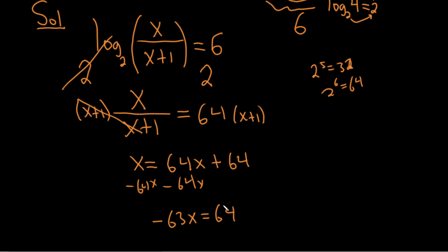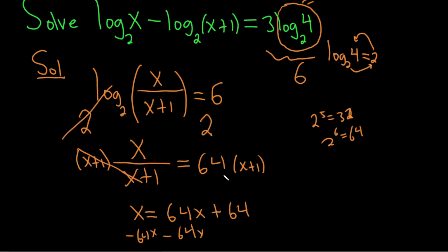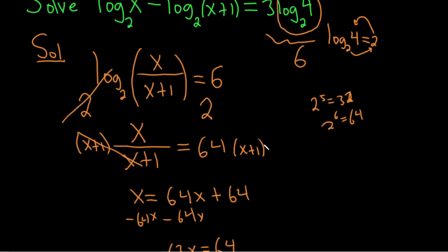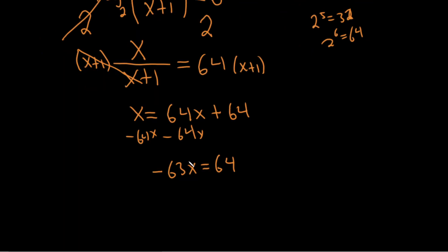That gives us negative 63x equals 64. That's a strange-looking answer — let me check if something went wrong. Dividing by negative 63, x equals 64 over negative 63. That is the potential answer.